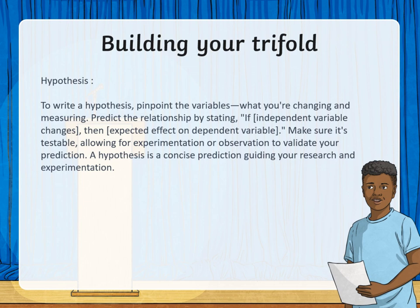Then, we are going to move to the hypothesis. To write a hypothesis, pinpoint the variables — what you are changing and measuring. Predict the relationship by stating: if the independent variable changes, then the expected effect on the dependent variable. Make sure it's testable, allowing for experimentation or observation to validate your prediction. A hypothesis is a concise prediction guiding your research and experimentation process.